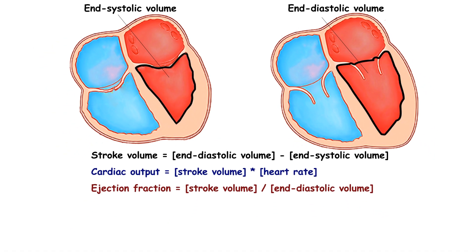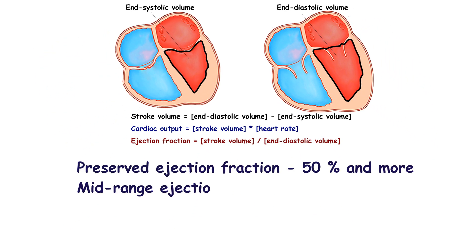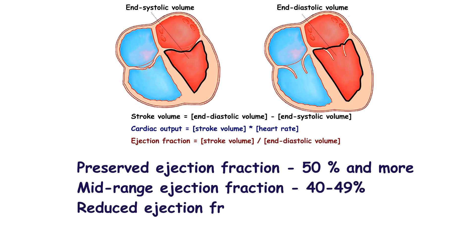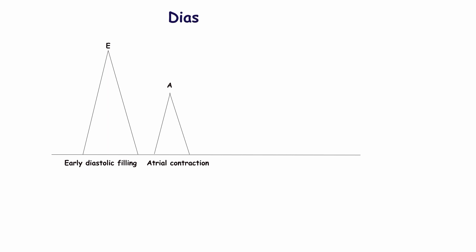Diagnosis is based on echocardiography, which allows measurement of left ventricular end-diastolic volume, ejection fraction, and stroke volume, and to identify signs of diastolic dysfunction. Systolic dysfunction is diagnosed when ejection fraction is less than 40%. Signs of diastolic dysfunction are based mainly on transmitral blood flow.